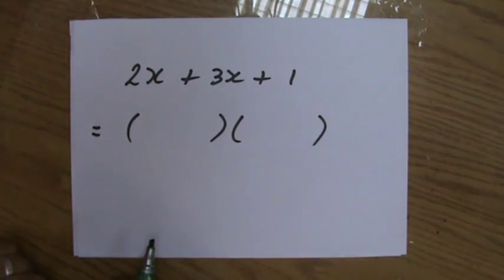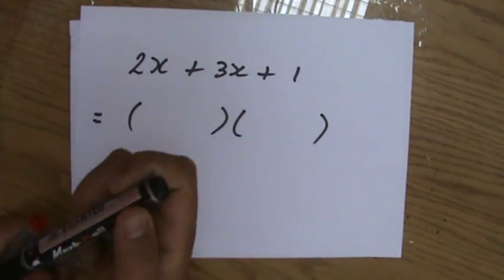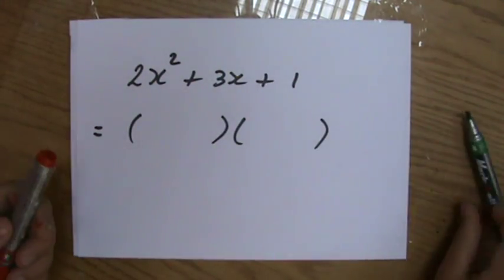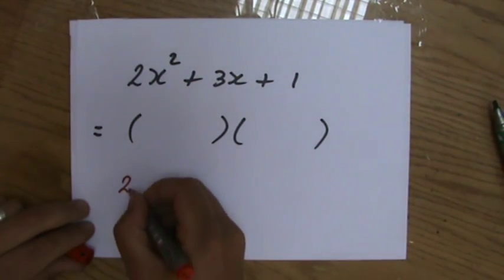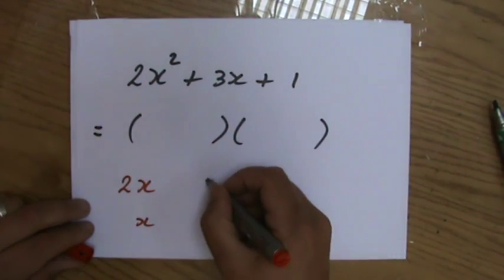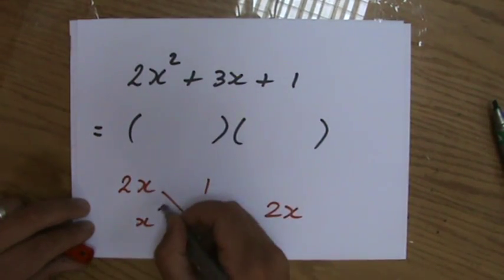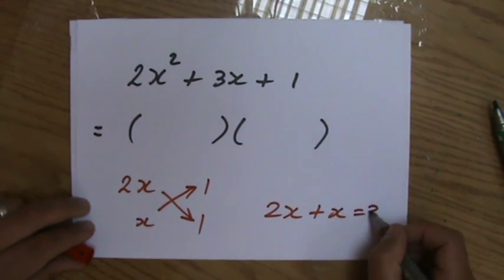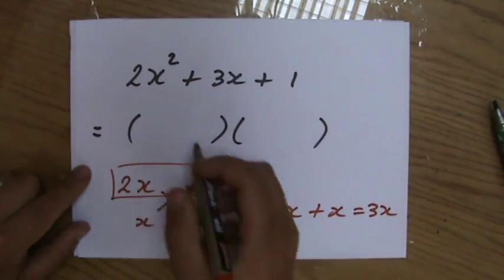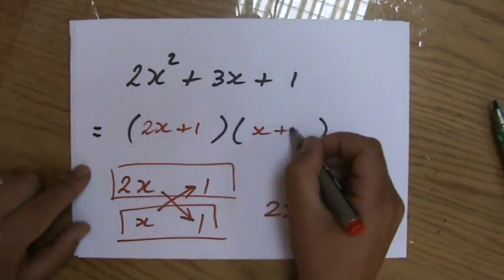Extra normal. I have to find a combination. What times what is 2x squared? That's only 2x times x. And what times what is 1? Only 1 times 1. Cross multiply: 2x times 1 is 2x, plus x times 1 equals indeed 3x. So then I go horizontally when I put it in my brackets: 2x plus 1 and x plus 1. That is my answer.